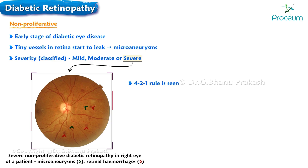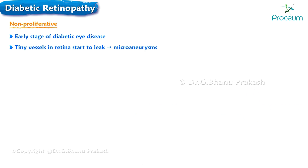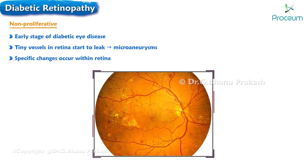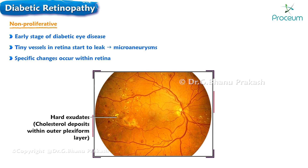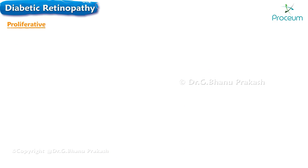Severe non-proliferative diabetic retinopathy is characterized by the 4-2-1 rule. This means there may be either four quadrants of dot and blot hemorrhages, two quadrants of venous beading, or one quadrant showing intra-retinal microvascular abnormalities, known as shunt vessels. In non-proliferative diabetic retinopathy, two common findings are hard exudates — caused by cholesterol deposits within the outer plexiform layer — and soft exudates, also known as cotton wool spots, observed in the nerve fiber layer.